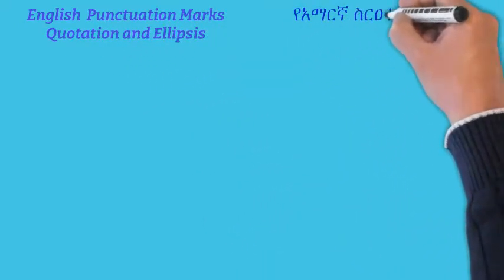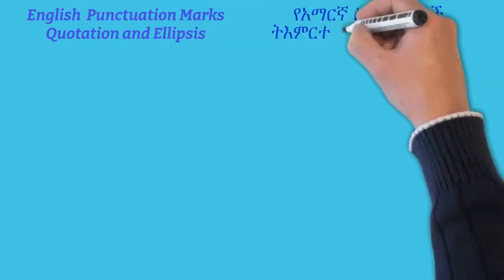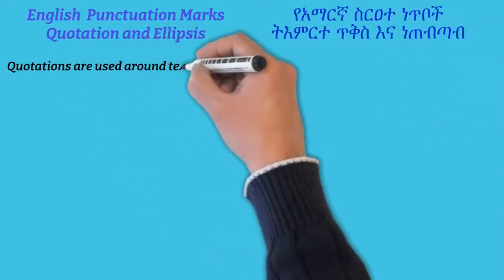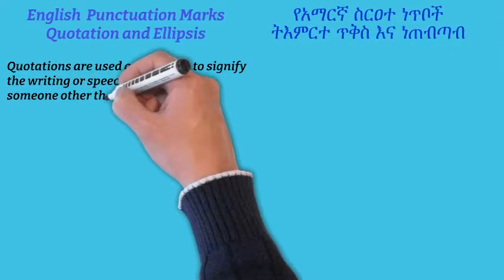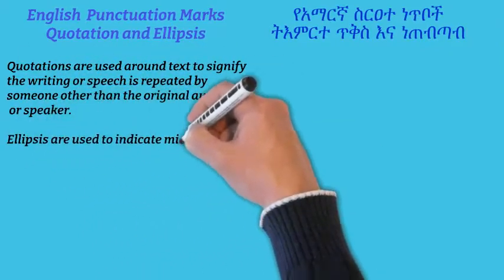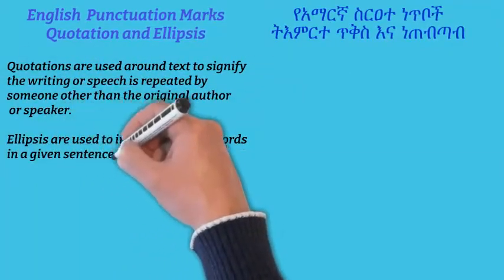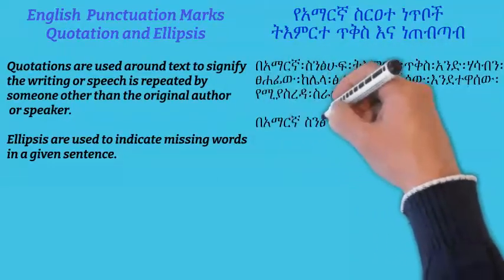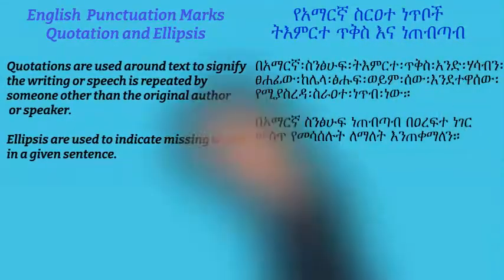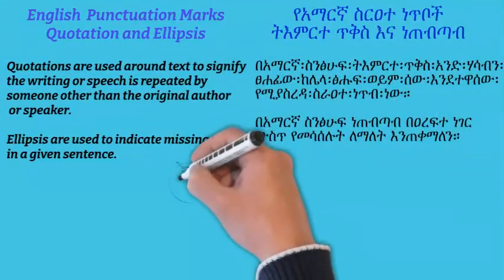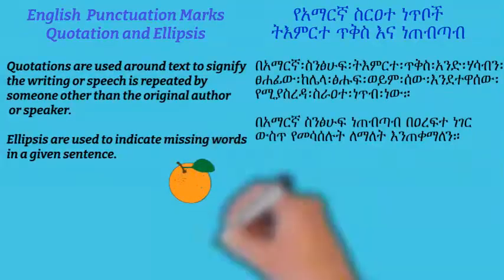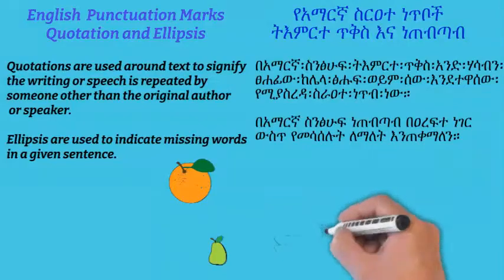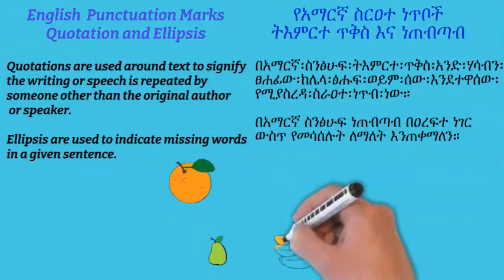Next let's see quotation marks and ellipses. Quotations are used around text to signify that the writing or speech is repeated by someone other than the original author or speaker. Ellipses are used to indicate missing words in a given sentence.